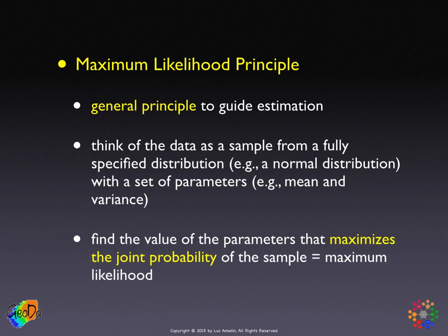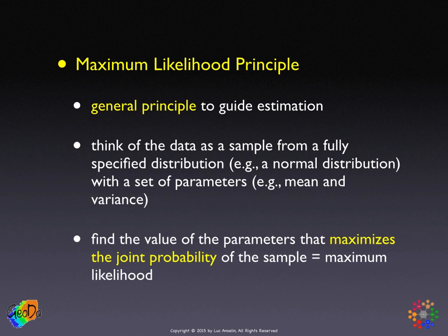Say we have 10 observations, so we have 10 of these probabilities. For each observation, we find its probability of coming from a Poisson distribution with a given mean — the parameter we are solving for. Say we set the parameter at 2 and find a joint probability of 0.3, then set it at 3 and find 0.5. We keep doing this until we find the parameter value that gives the highest possible joint probability — that is the maximum likelihood estimator.